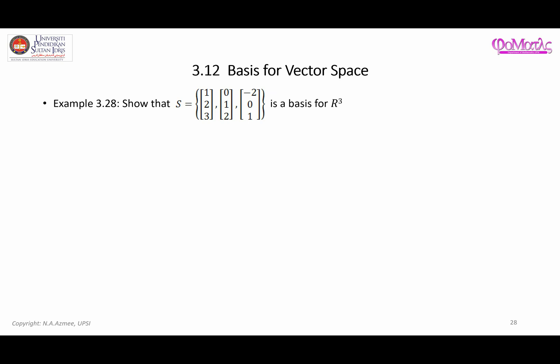In this video, I'm going to give more examples related to basis for vector space. We'll start with this example where we have a set S which contains three different vectors — the first, second, and third vector. You are asked to demonstrate that the set S is a basis for the vector space R³ (real numbers with three dimensions).